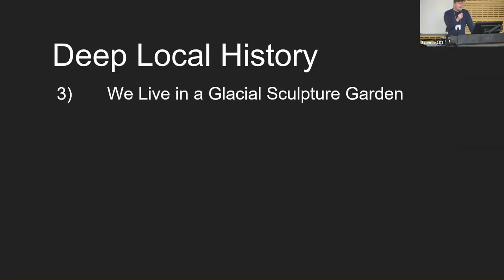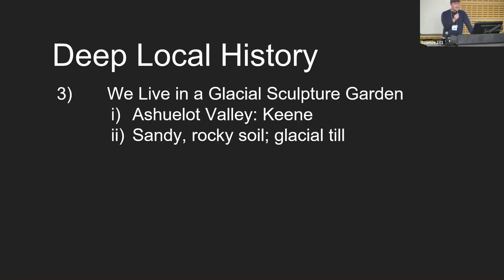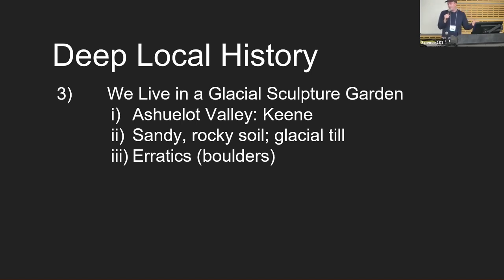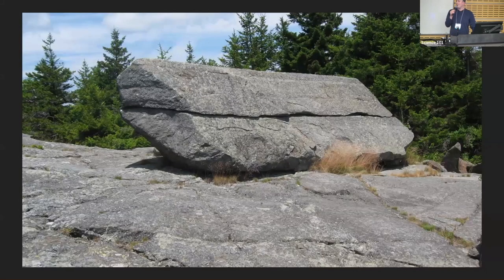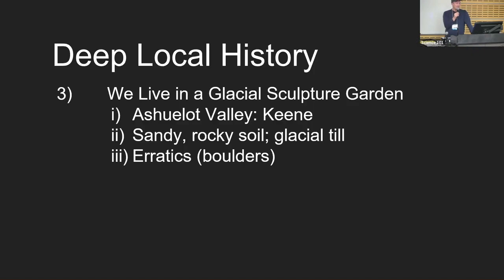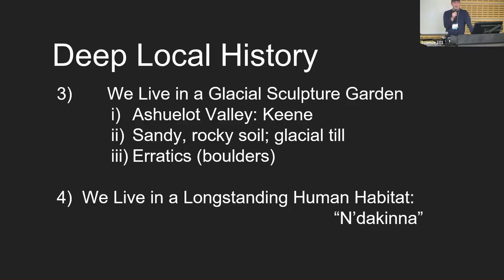By the same token, we live in a glacial sculpture garden. We talked about the valley and the soil. We can also talk about the erratics — those boulders picked up or broken off by glaciers and then dropped when they melted. Here's the sarcophagus glacial erratic up on the Pumpelly Trail on Mount Monadnock. We live in a long-standing human habitat — at the same time that glacier retreated, Homo sapiens showed up.